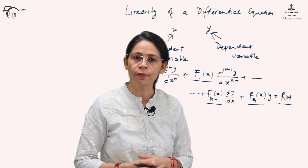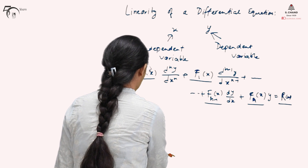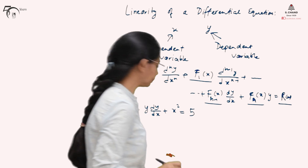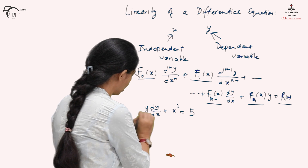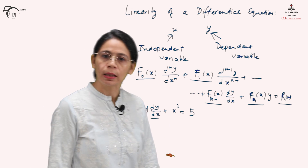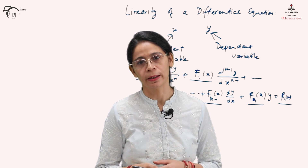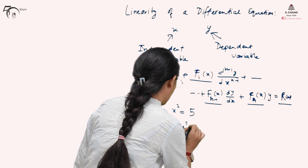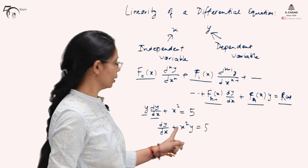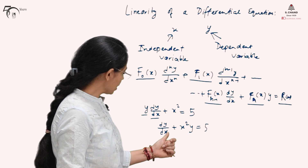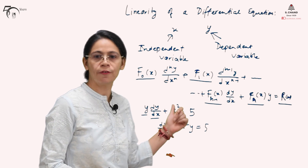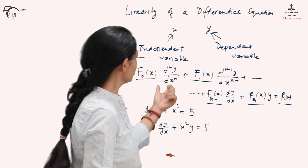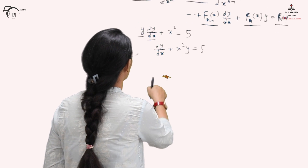So how does a non-linear differential equation look? Suppose we take the differential equation y dy/dx + x² = 5. This differential equation has the multiplication of the dependent variable with its derivative, and therefore it is called a non-linear differential equation. If we remove y from here and rewrite it as dy/dx + x² = 5, now this is a linear differential equation. The order of both differential equations is 1 and the degree is also 1.